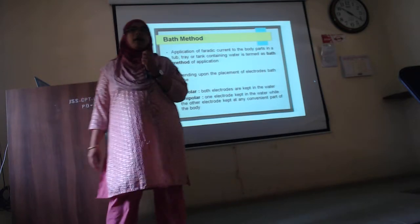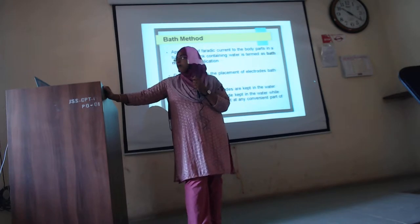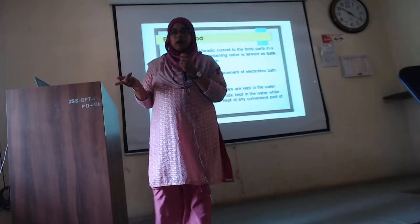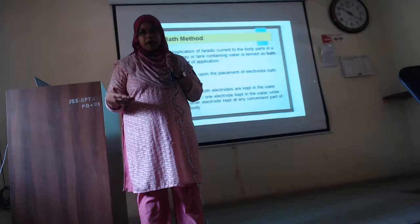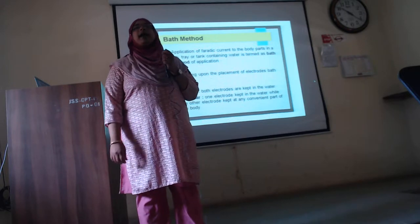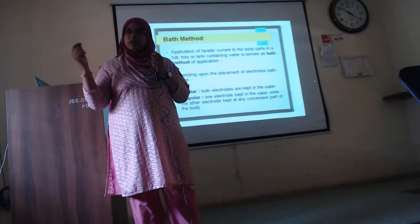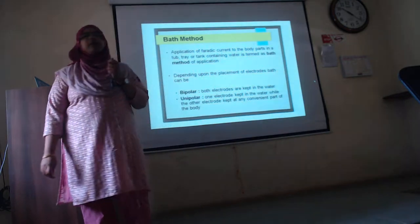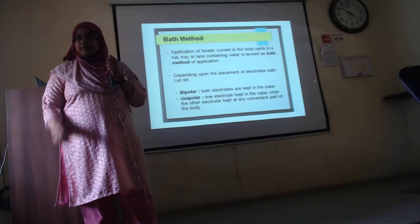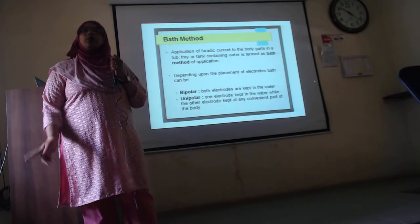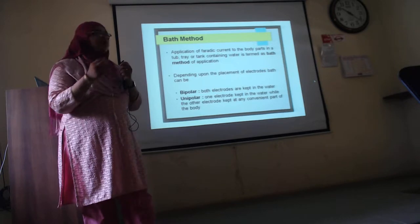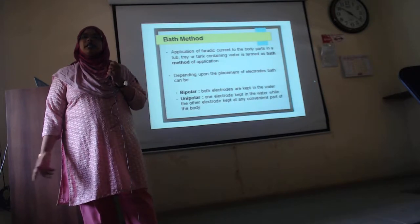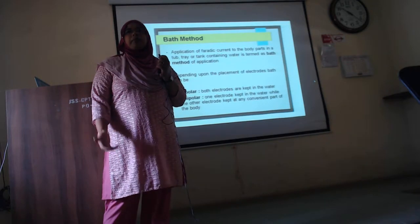Basically, the application of faradic current to body parts in a tub or tray containing water is termed the bath method of application. It can be given in two forms: unipolar or bipolar. Unipolar refers to one electrode immersed in the bath water and the other connected at a convenient part to complete the circuit. Bipolar refers to both electrodes immersed in the water. The muscles generally stimulated are the interossei, lumbricals, and abductor hallucis.